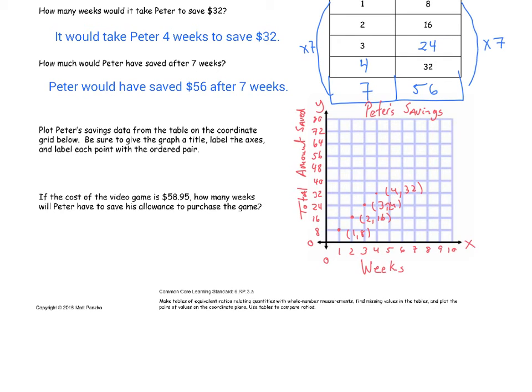So we don't have the other points except for after seven weeks. So let's go all the way up to seven weeks. After seven weeks, Peter has saved a total of (7,56). So he saved a total of $56.